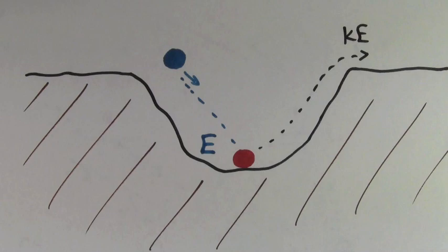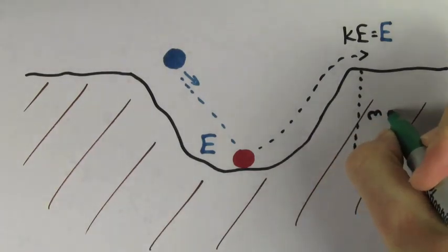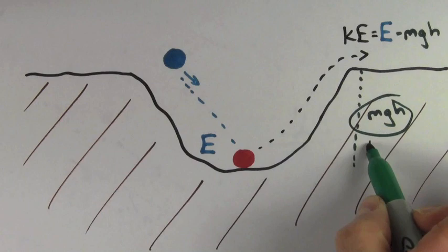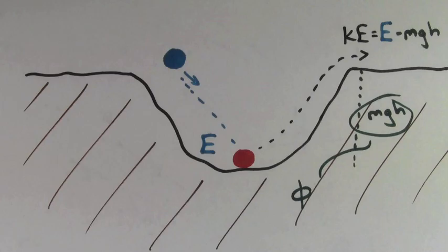Part of the energy the blue ball gave the red ball goes into kinetic energy, but part of it goes into the potential energy required to bring the ball out of the ditch. This potential energy that a red ball needs to get out of the ditch is analogous to the work function of a metal.